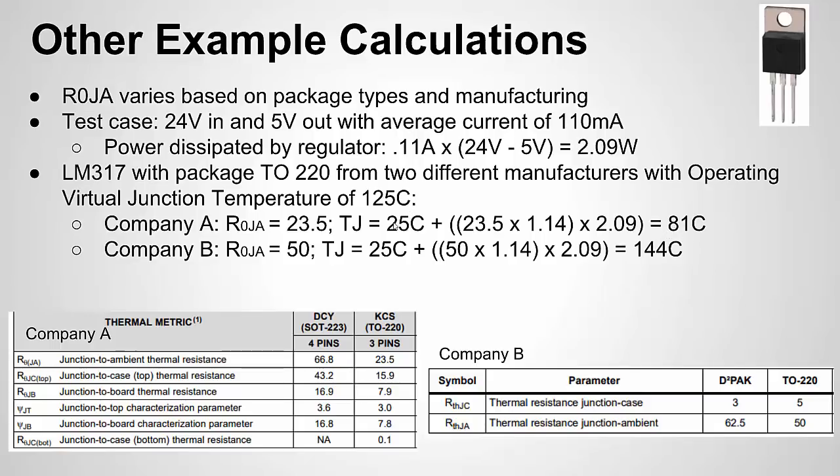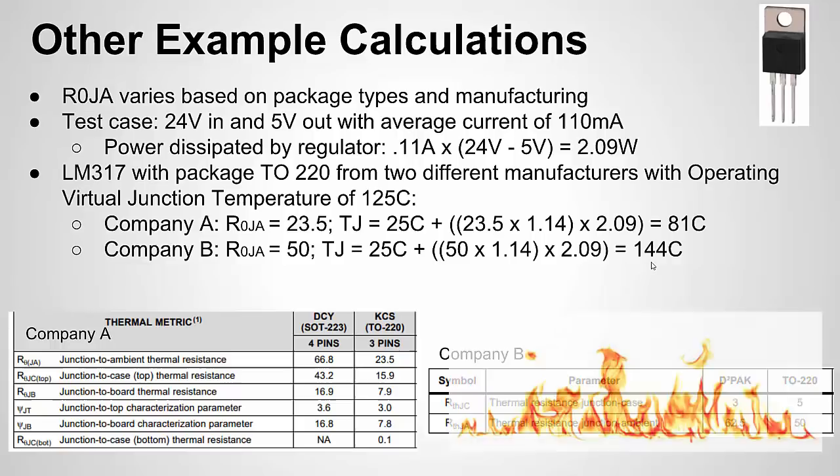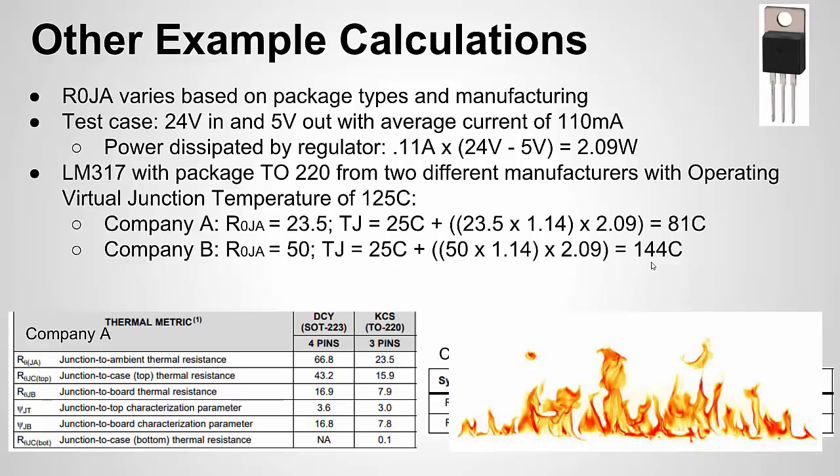If I do the same thing for company B, now I'm at 144 degrees Celsius. Basically, if I picked company B's IC, which is probably cheaper, I'm probably going to burn it up if I use it in these conditions. I wanted to show the calculation again in action and show how this spec can vary from company to company.